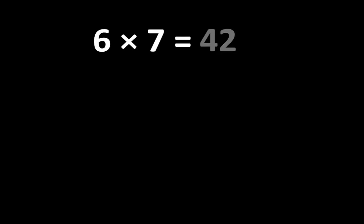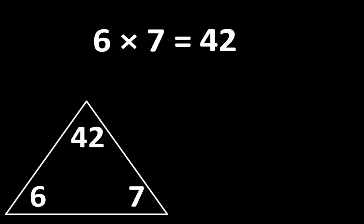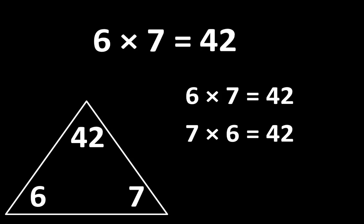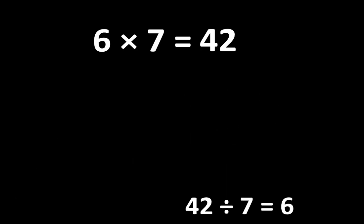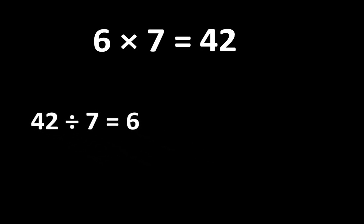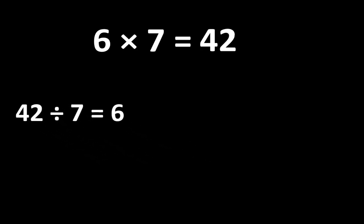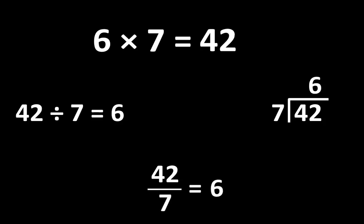6 times 7 is equal to 42. Let's examine some ways that 6, 7, and 42 are related to each other. If 6 times 7 is equal to 42, then 7 times 6 is also equal to 42. And since multiplication is related to division, we also know that 42 divided by 6 is equal to 7, and 42 divided by 7 is equal to 6. There are several different ways to write this idea, and that can be very useful.